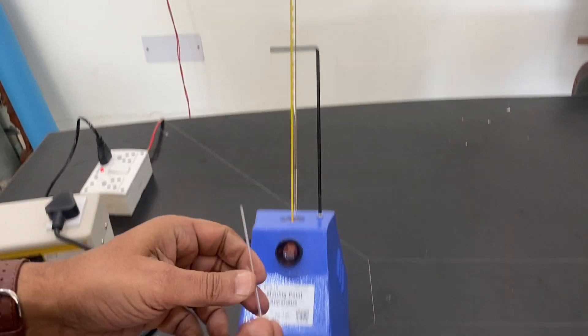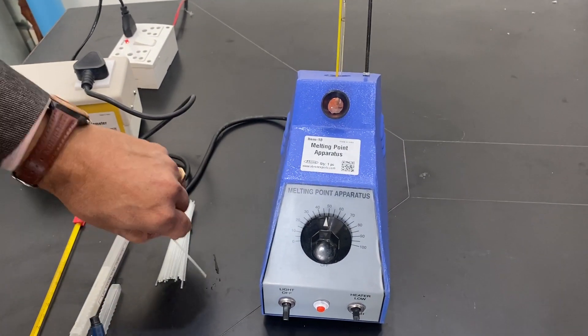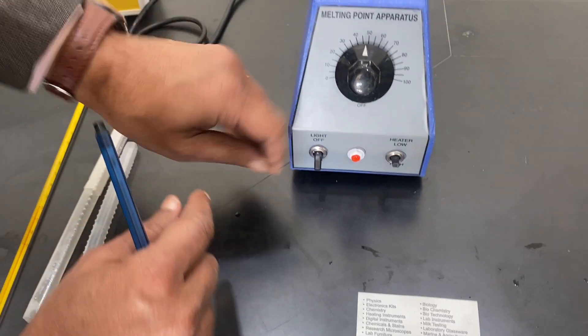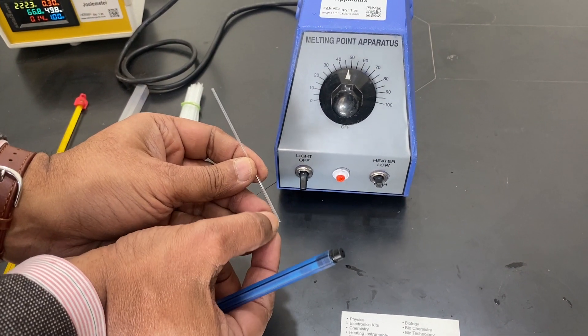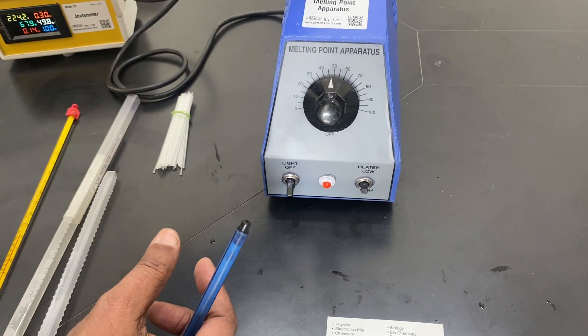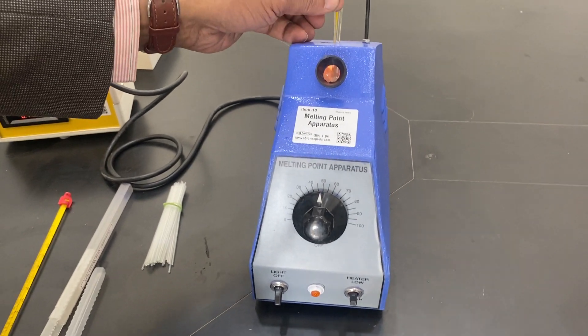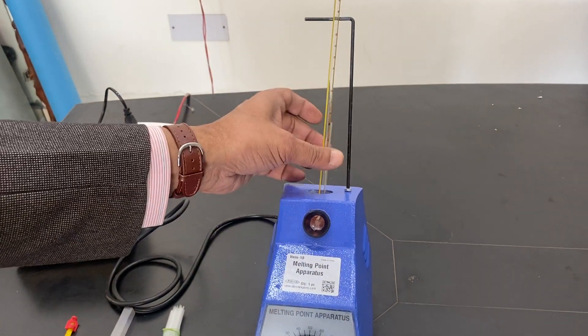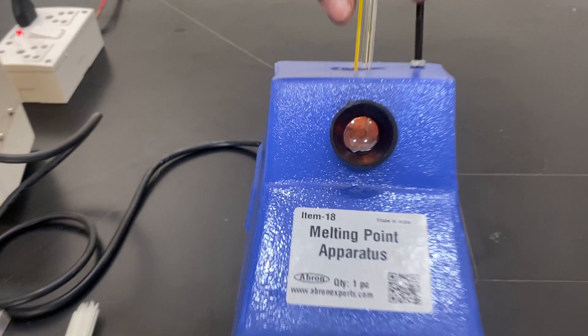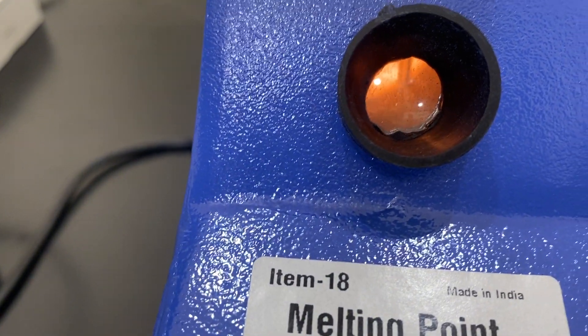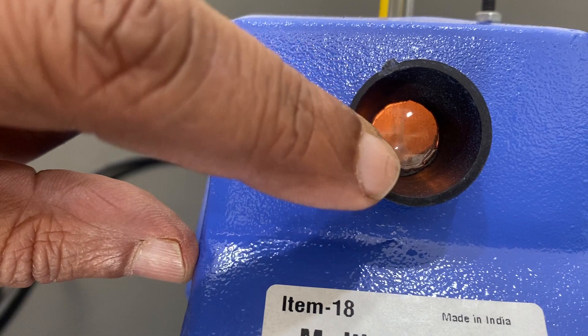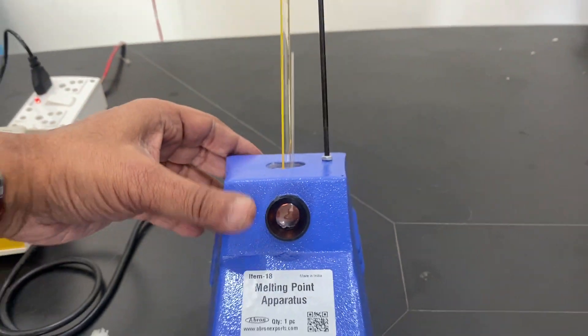When you have to test the sample, seal this with the burner. Fill it with the powder, tap it, fill it, tap it. It should be minimum about half a centimeter to one centimeter. Then you can put the sample inside. You can see inside the sample, these capillaries.